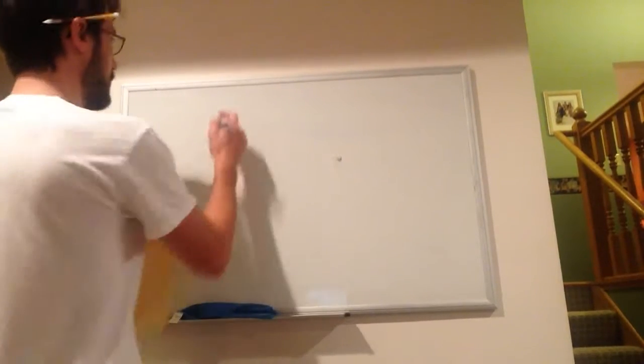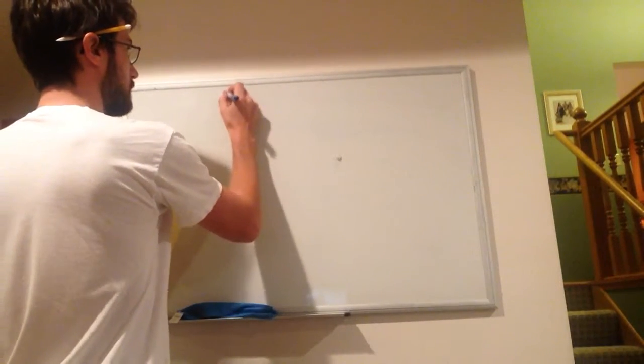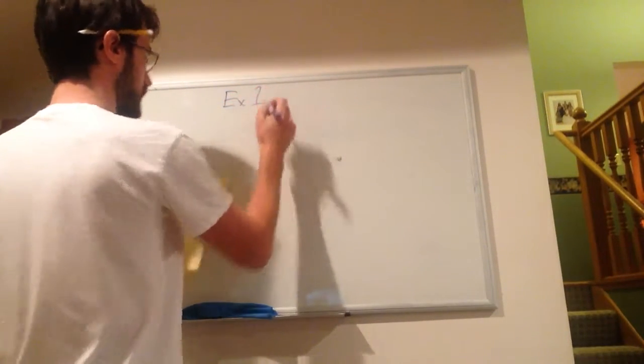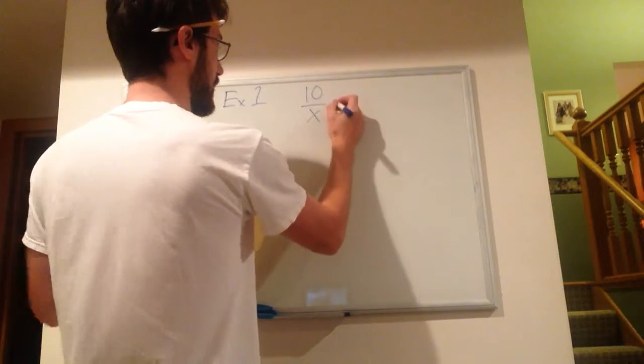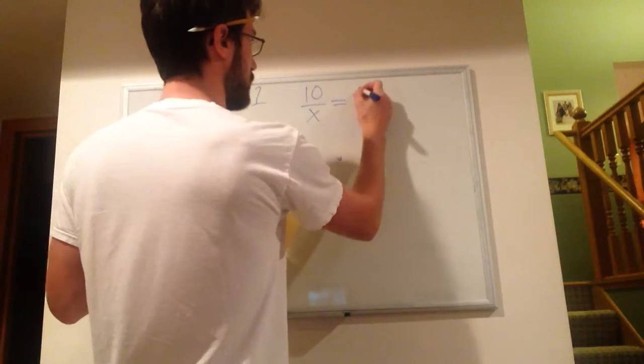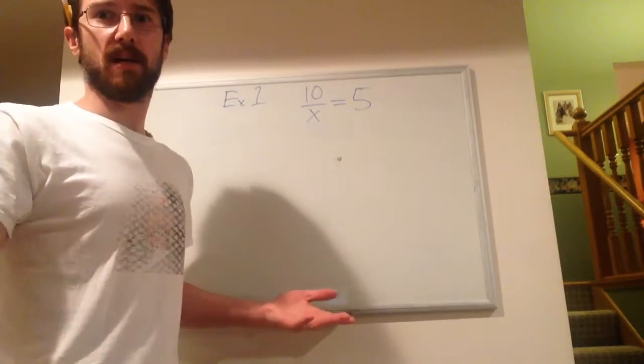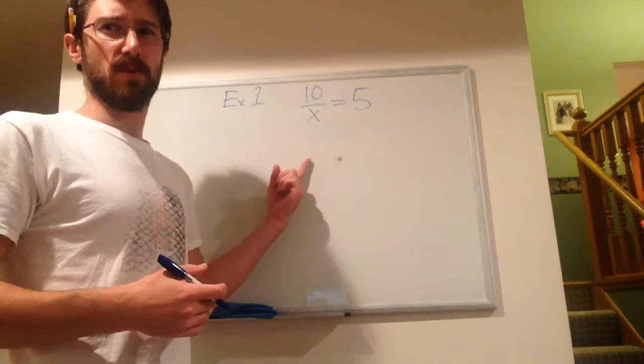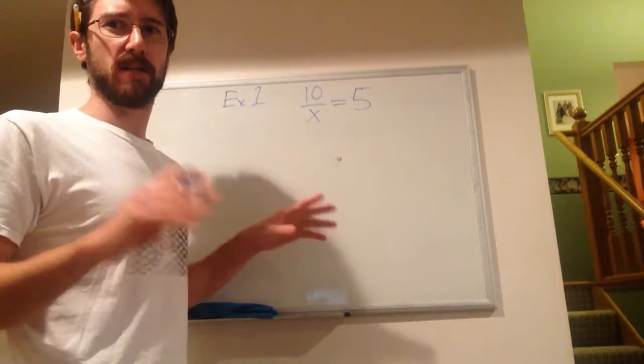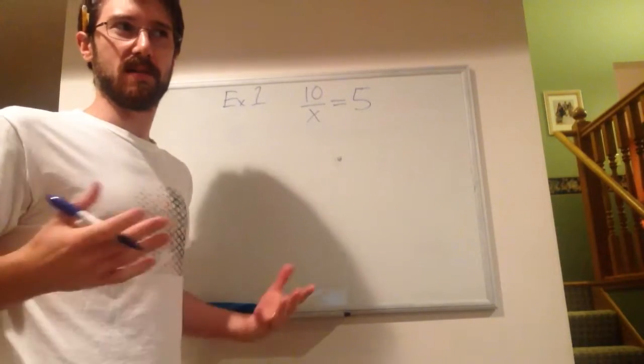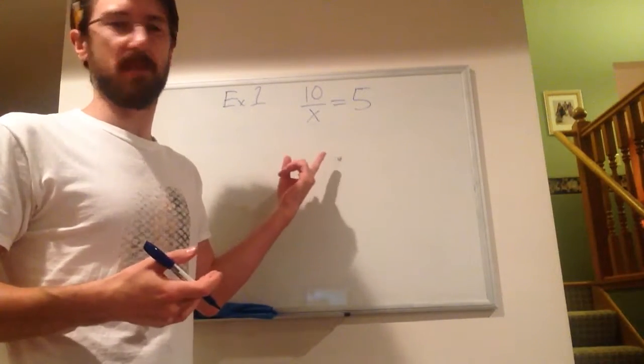So our first example is a relatively simple one, solving this for x: 10 over x equals 5. Now, I'm guessing a lot of us can look at this and say, yep, I know what x is. Okay, but bear with me, we're going to go through it like the technical mathematical way, because this isn't the one that you're going to have to actually do.